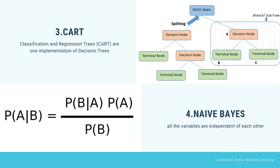The next algorithm is Naive Bayes. To calculate the probability that an event will occur given that another event has already occurred, we use the Naive Bayes theorem. To calculate the probability of a hypothesis x being true given our prior knowledge, we also use the Naive Bayes theorem. This algorithm is called 'naive' because it assumes all variables are independent of each other, which is a naive assumption to make in real-world examples.